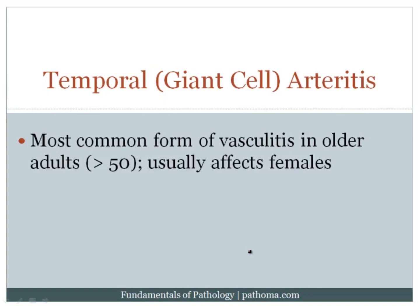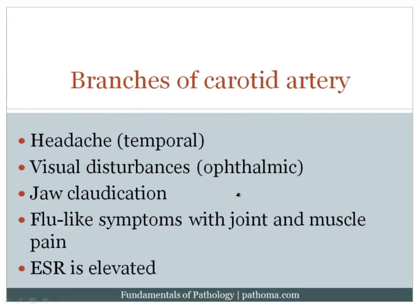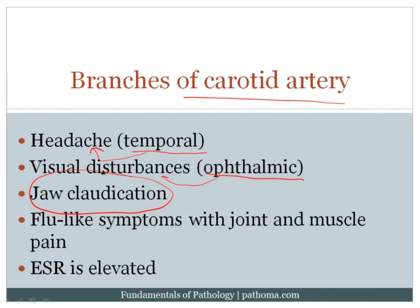Temporal giant cell arteritis is the most common form of vasculitis in older adults, classically seen in patients greater than age 50, and it usually affects females. The classic location is branches of the carotid artery — for example, the temporal artery, which leads to headache; the ophthalmic artery, which leads to visual disturbances; and the arteries feeding the jaw, giving us jaw claudication. The temporal artery involvement gives us the term temporal arteritis.